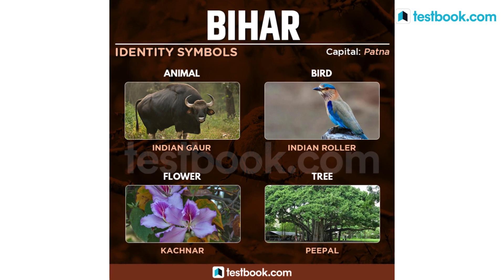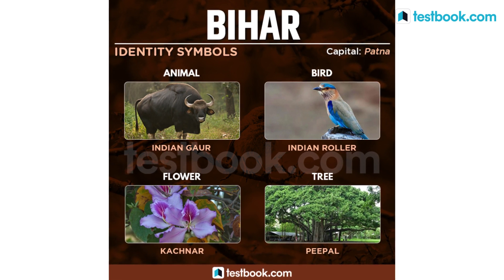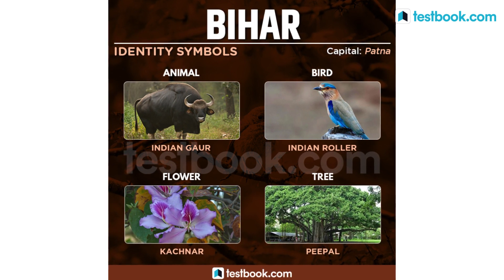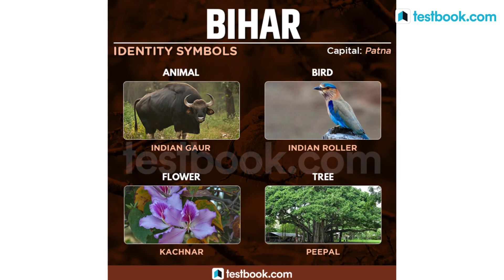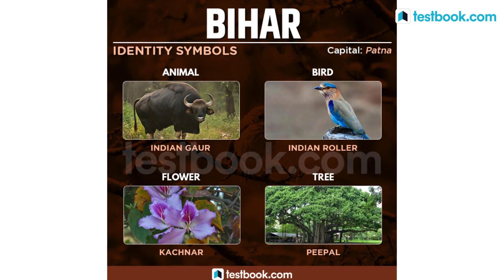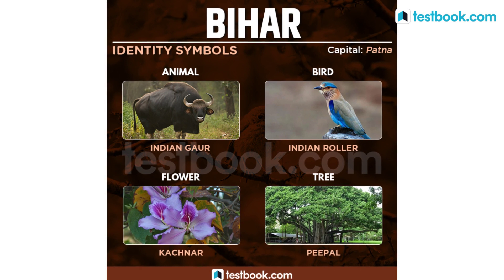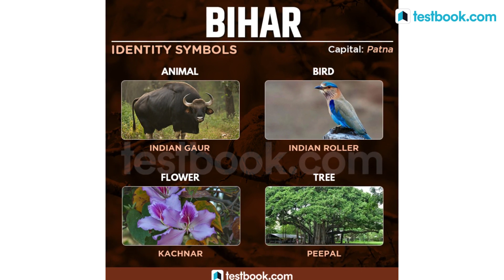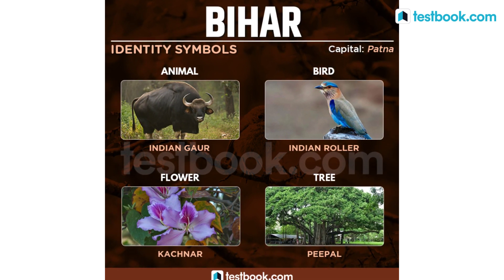For Bihar, the state animal is Indian Gaur, state bird is Indian Roller, state flower is Kachnar and state tree is Peepal.